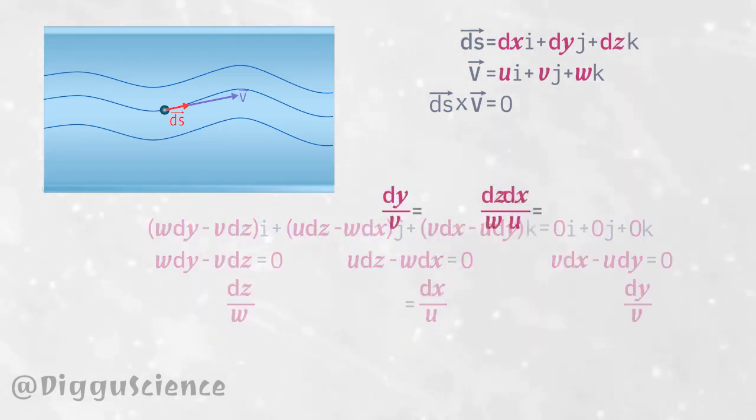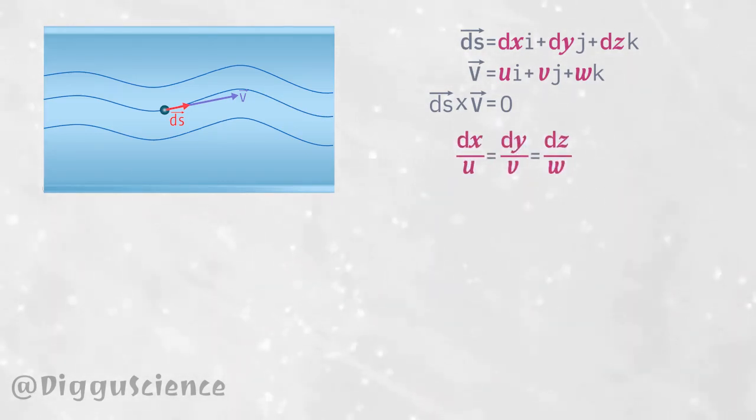Putting all the values together: dx over u equals dy over v equals dz over w. This is the streamline equation.